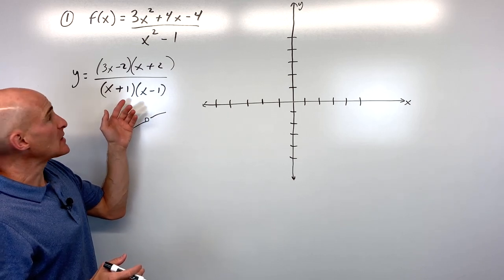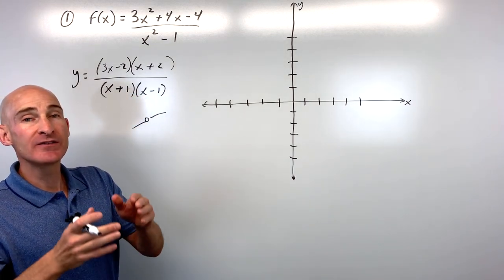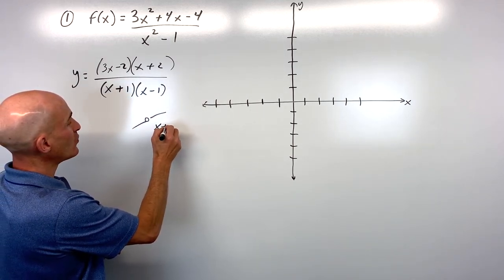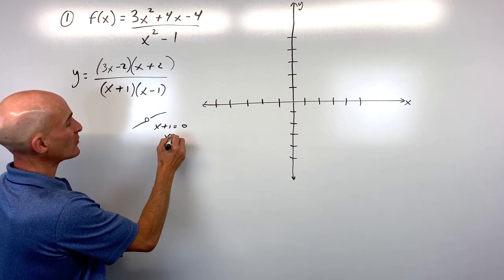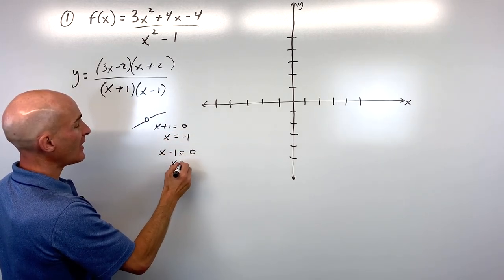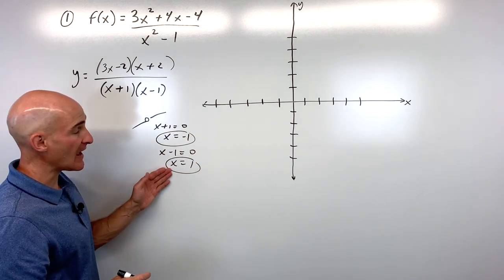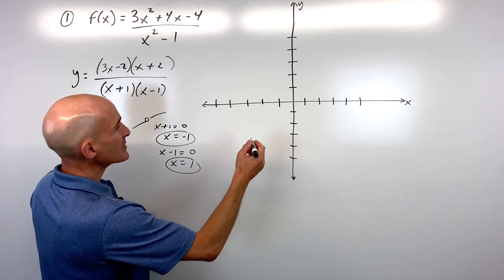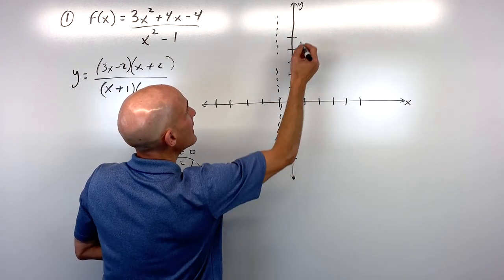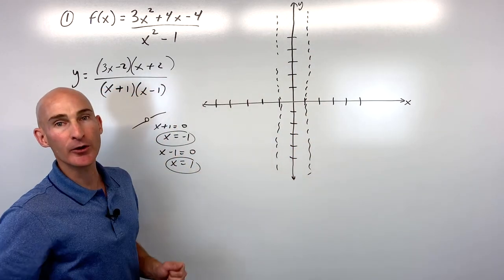The next thing is to set the denominator's factors equal to zero to find your vertical asymptotes. Setting x+1=0 gives x=-1, and setting x-1=0 gives x=1. So our vertical asymptotes are at x=-1 and x=1. Let's sketch those in right now.